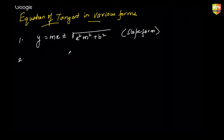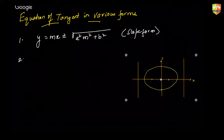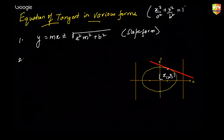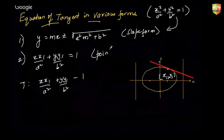Second is the point form. This is the case where you have been given a point and asked to write the equation of a tangent at that point, say (x₁, y₁). For the standard form of the ellipse, the equation becomes xx₁/a² + yy₁/b² = 1. Please note this expression will be referred to by the symbol T henceforth.